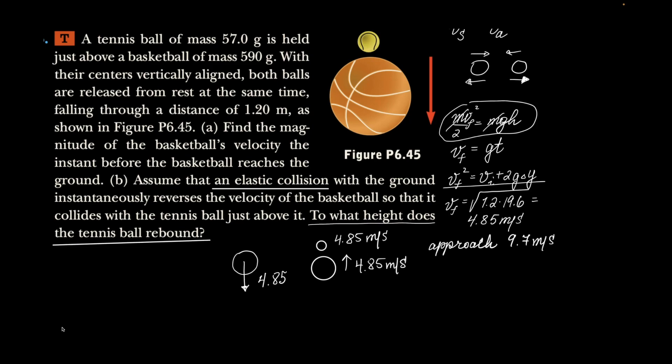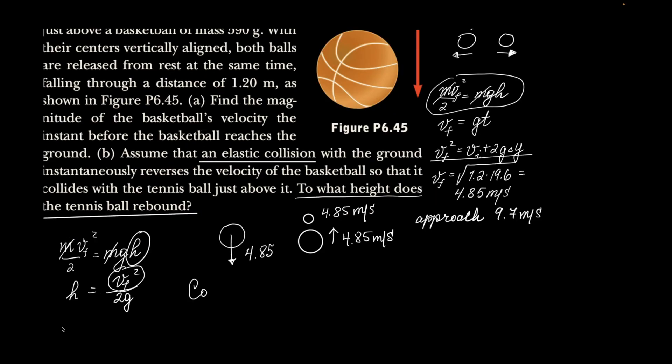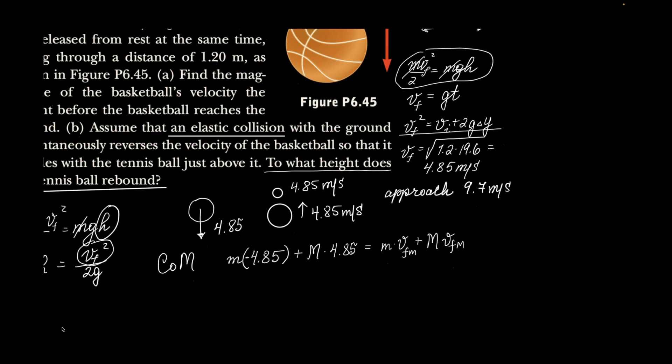In order for me to figure out the height I could do mv_final² over 2 equal mgh. This h is what I'm after. Masses would cancel. So h would be just the v_final² over 2g. Now the question is how am I going to find the v_final²? I'm going to employ two things: conservation of momentum, and then elastic collision rule.